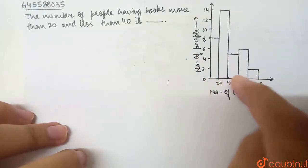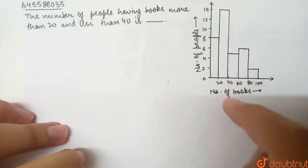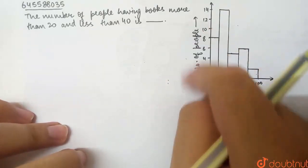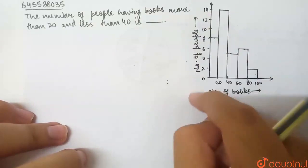0 to 20, 20 to 40, 40 to 60, 60 to 80 and 80 to 100. And in every class, our frequency, that is, how many people have books in that bracket, they represent.